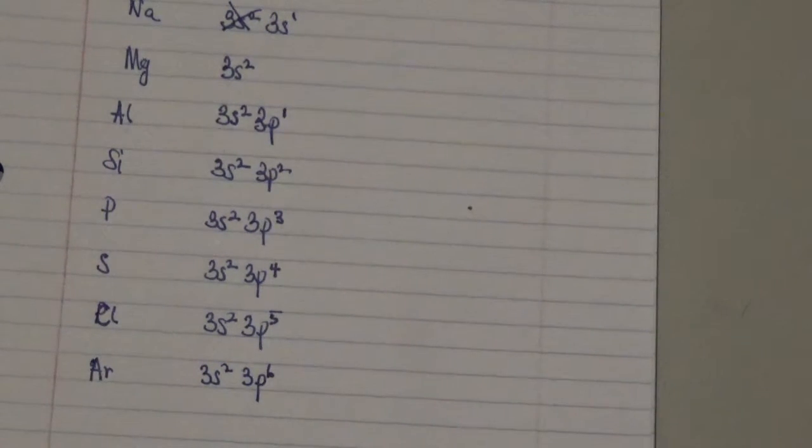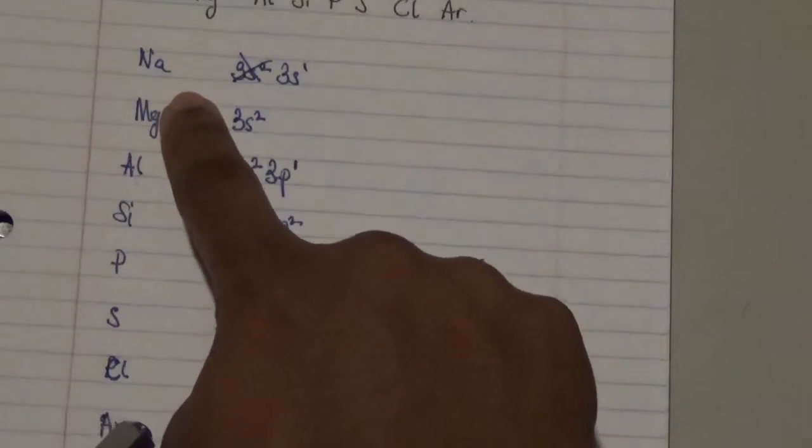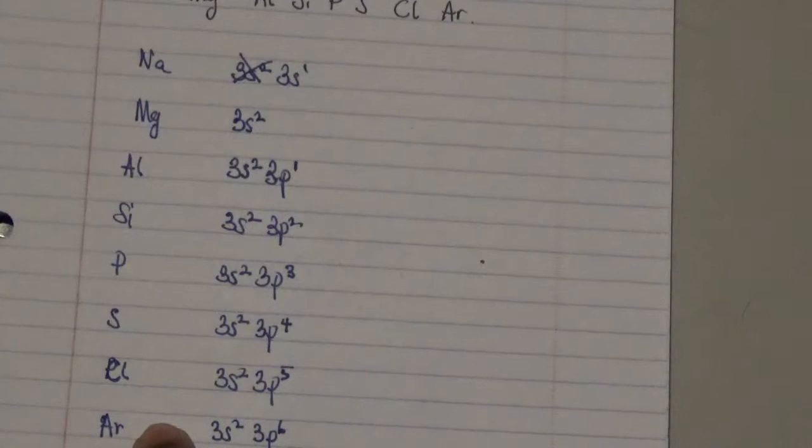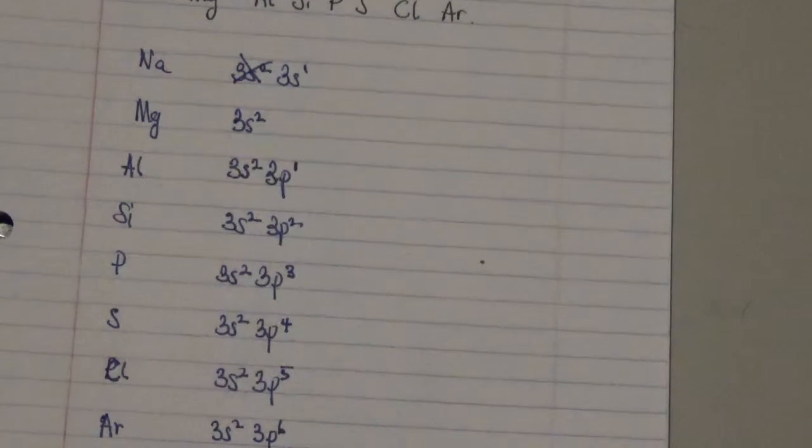So that's about it for all these various elements that are in period 3 and they are in the third electronic shell and they all contain the 3s orbitals and the 3p orbitals. And some of them also have 3d orbitals but all of them don't have electrons in it at all.